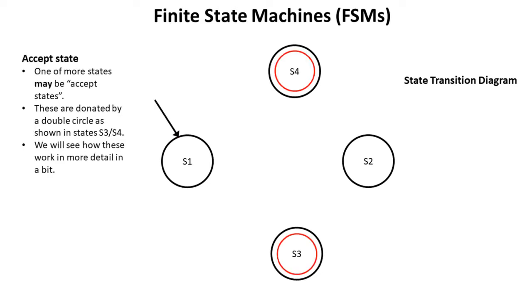You can have one or more accept states. These are denoted by double circles. So here state three and four are accept states and we're going to see how they work in a little bit more detail in a bit.